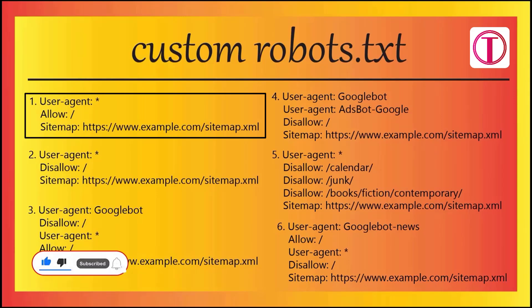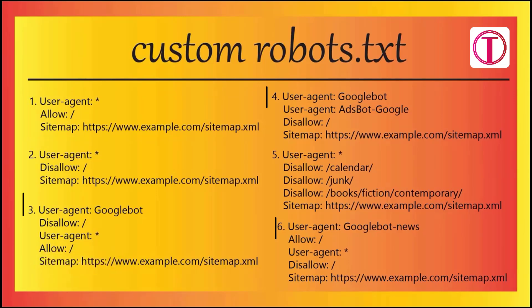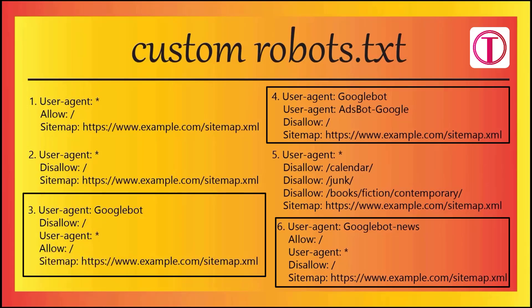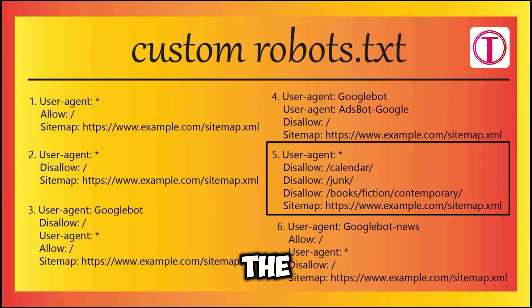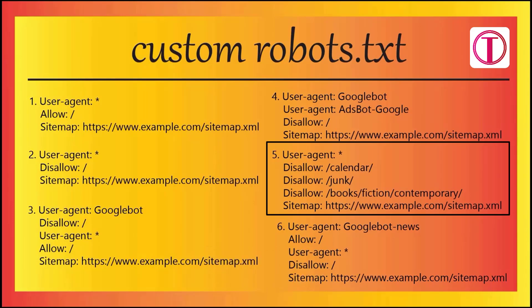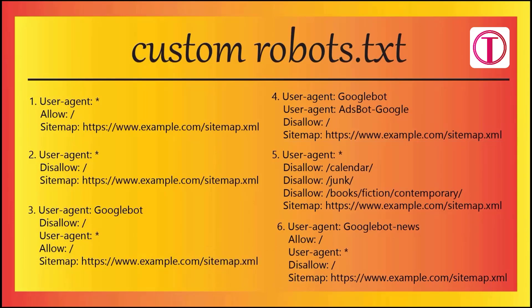Now, how to create a custom robots.txt file properly: if your website is ready and all customizations are complete, follow example one. If you want to allow the website to be indexed by certain search bots and not others, follow examples three, four, and six. If you want to block some pages or posts while indexing all others, follow example five.